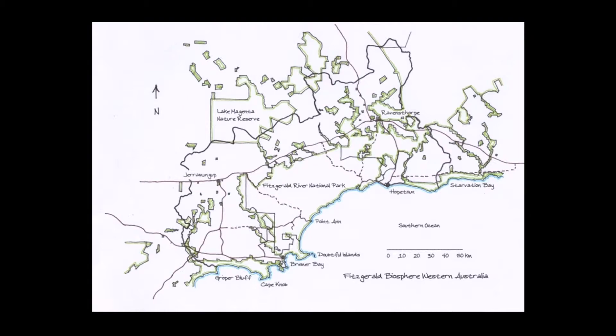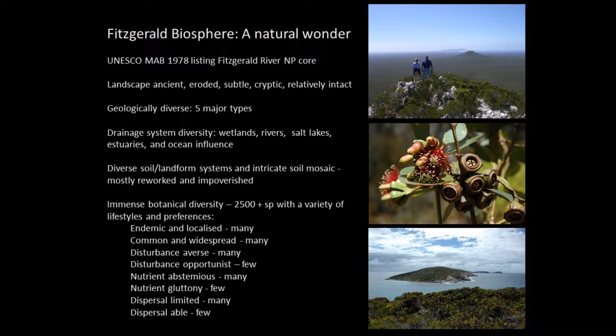Fitzgerald Biosphere is a biosphere reserve because it's a natural wonder. It achieved UNESCO's Manor Biosphere listing in 1978, but that was the old biosphere type — only a protected area, that is a national park or a reserve. It's a landscape that's very ancient, eroded, very subtle, cryptic and relatively intact. There's farming around the national park and cleared landscapes, but also a lot of intact natural landscapes and seascapes. It's geologically diverse, with five major geological types. Inland, it's the southern edge of the Yilgarn granite craton.